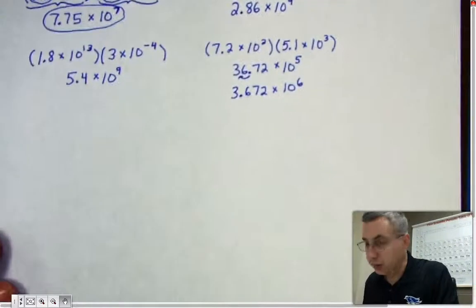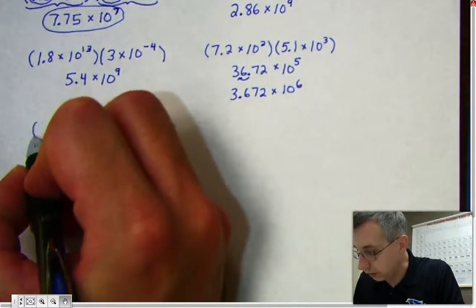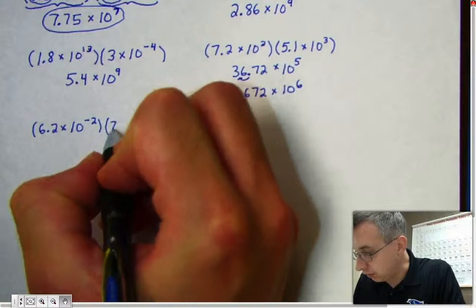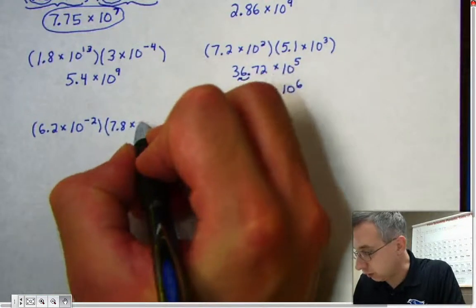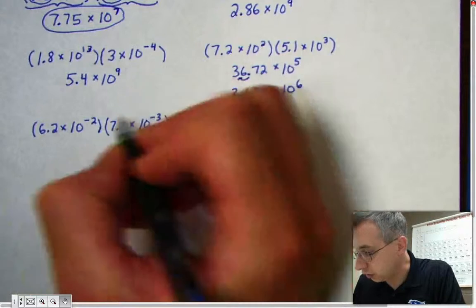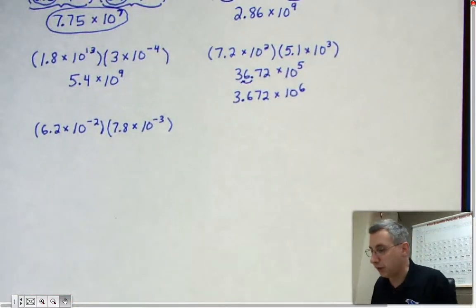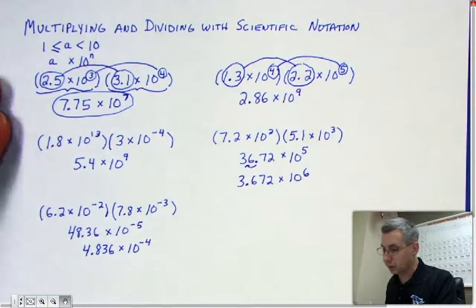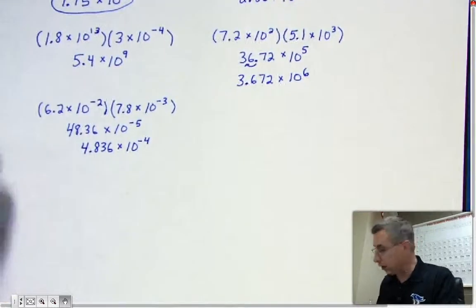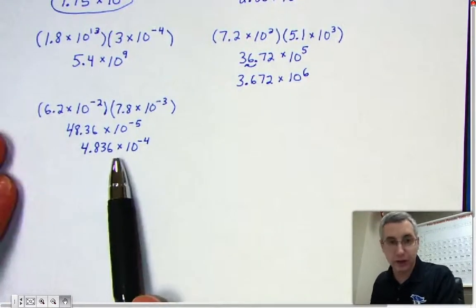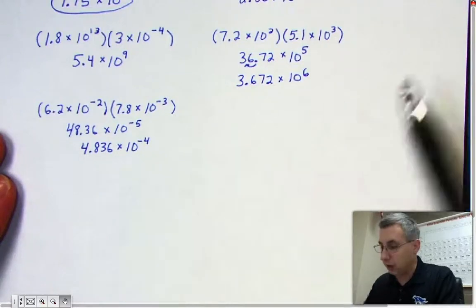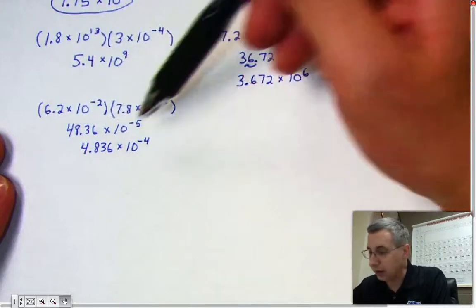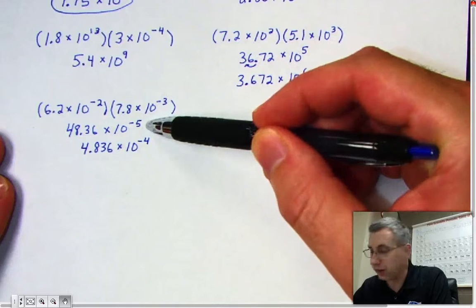Let me give you one to try: 6.2 times 10 to the negative 2 times 7.8 times 10 to the negative 3. Please press pause and solve that one, making sure it's in correct scientific notation. Your answer should be 4.836 times 10 to the negative 4. You take 6.2 times 7.8 and get 48.36 times 10 to the negative 5th. You get negative 5 by adding negative 2 plus negative 3.